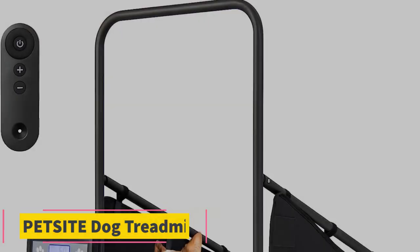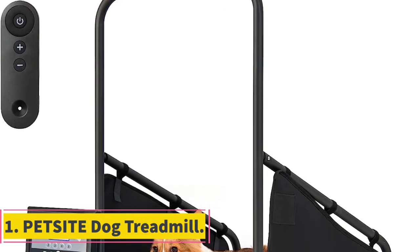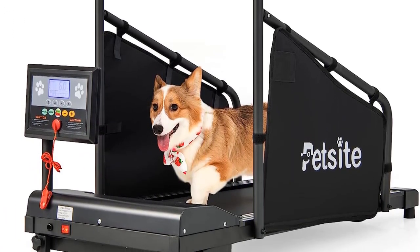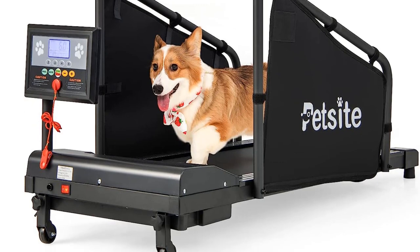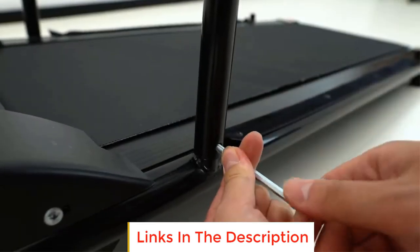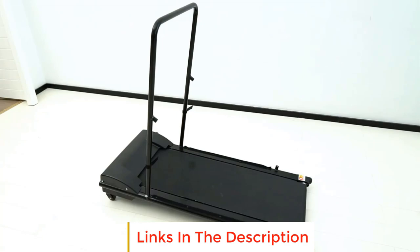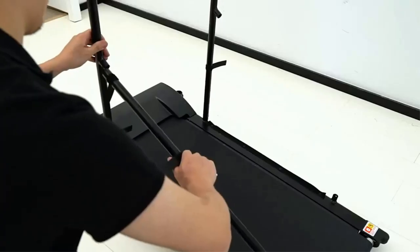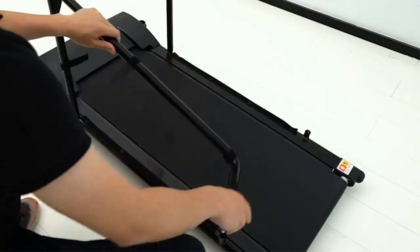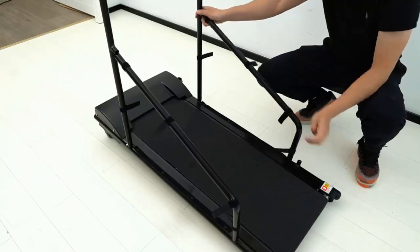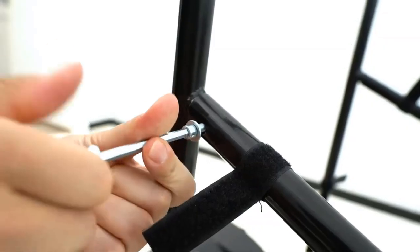Number 1. PetSight Dog Treadmill. The PetSight Dog Treadmill is a specialized exercise machine designed to cater to the fitness needs of your canine companion. In the quest to ensure your pet stays healthy and fit, this treadmill offers a convenient and efficient solution. It allows your dog to engage in physical activity without the need to venture outdoors, making it particularly useful during inclement weather or when your schedule is too tight for a long walk.